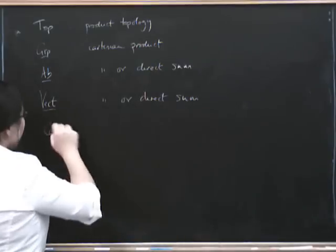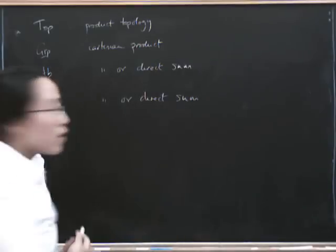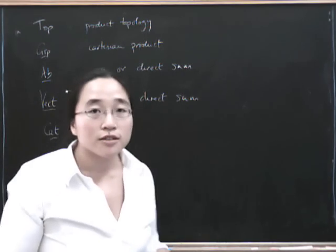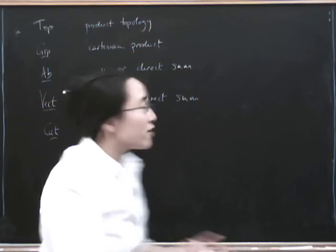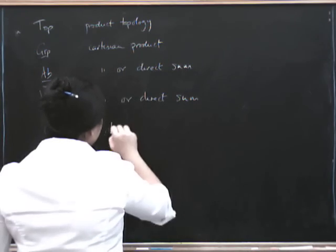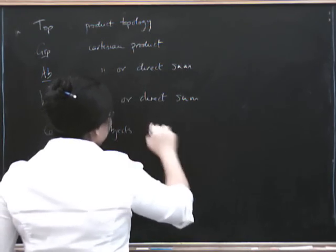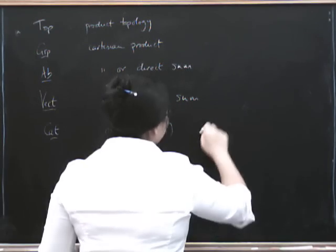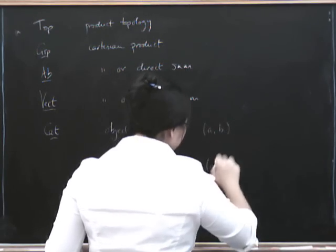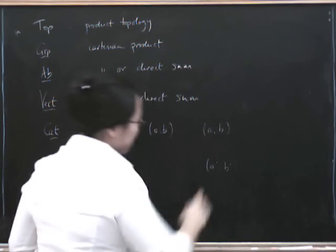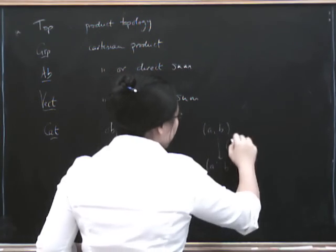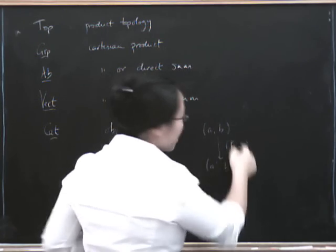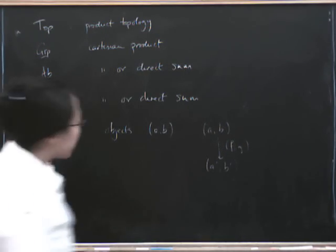Another place you can take products is in the category of categories, where you basically take the Cartesian product of your objects and then you do the similar kind of thing on morphisms as well. So here the objects are pairs AB, where A is in A and B is in B. And then morphisms, a morphism from AB to A prime, B prime is going to be a pair of morphisms, F, G, where F goes from A to A prime and G goes from B to B prime.